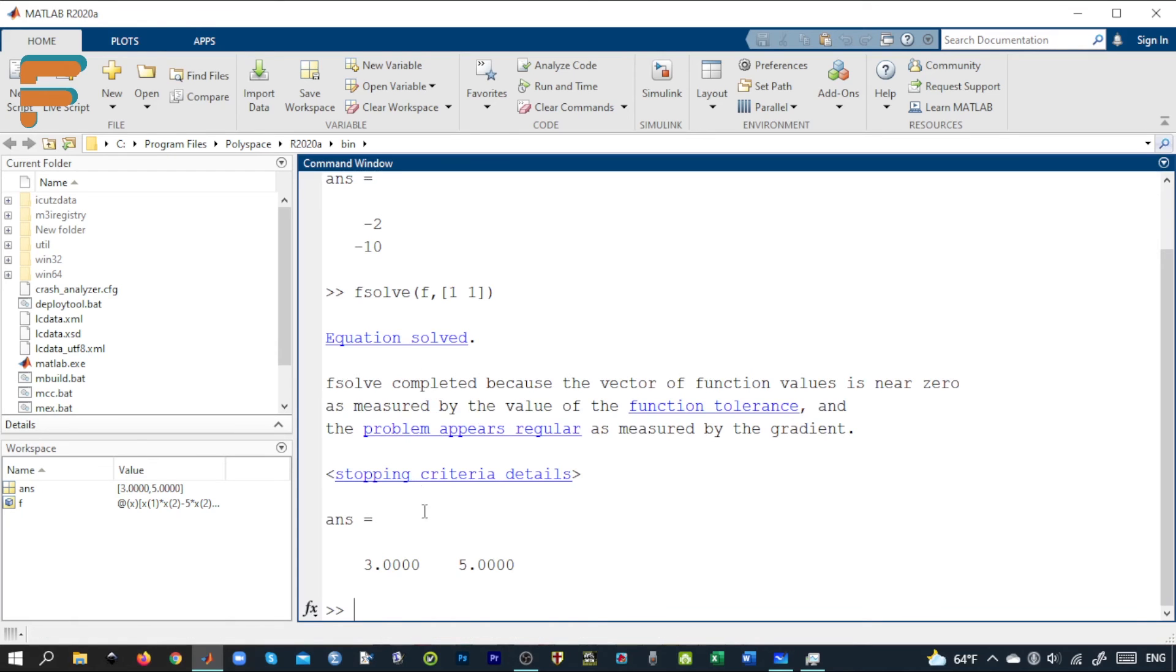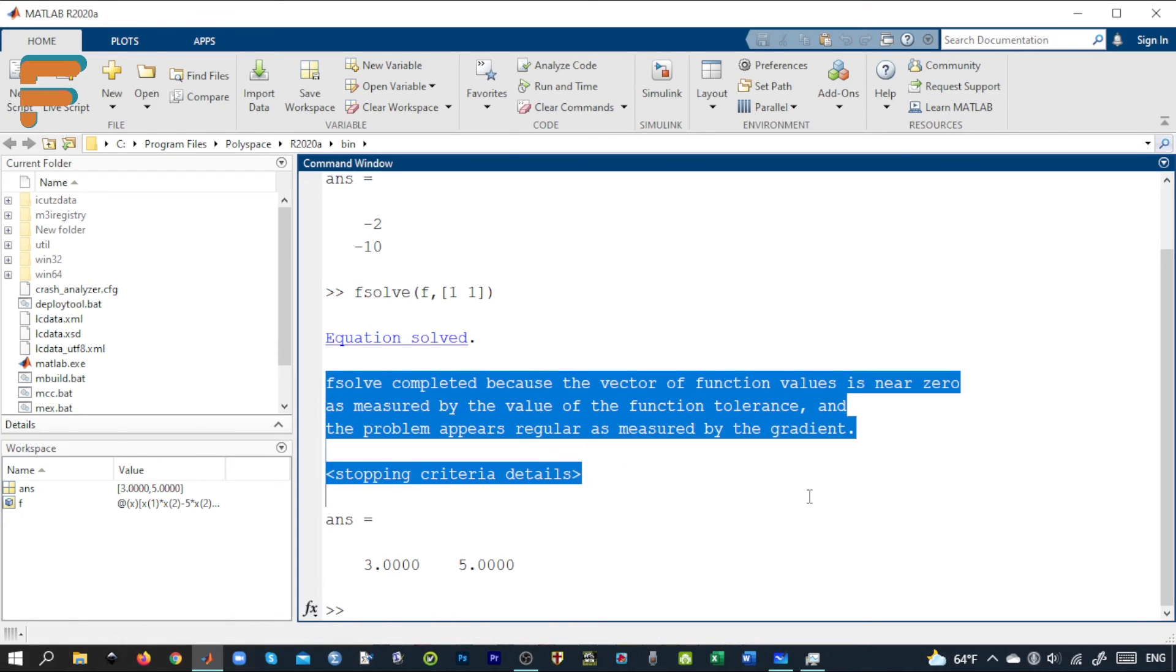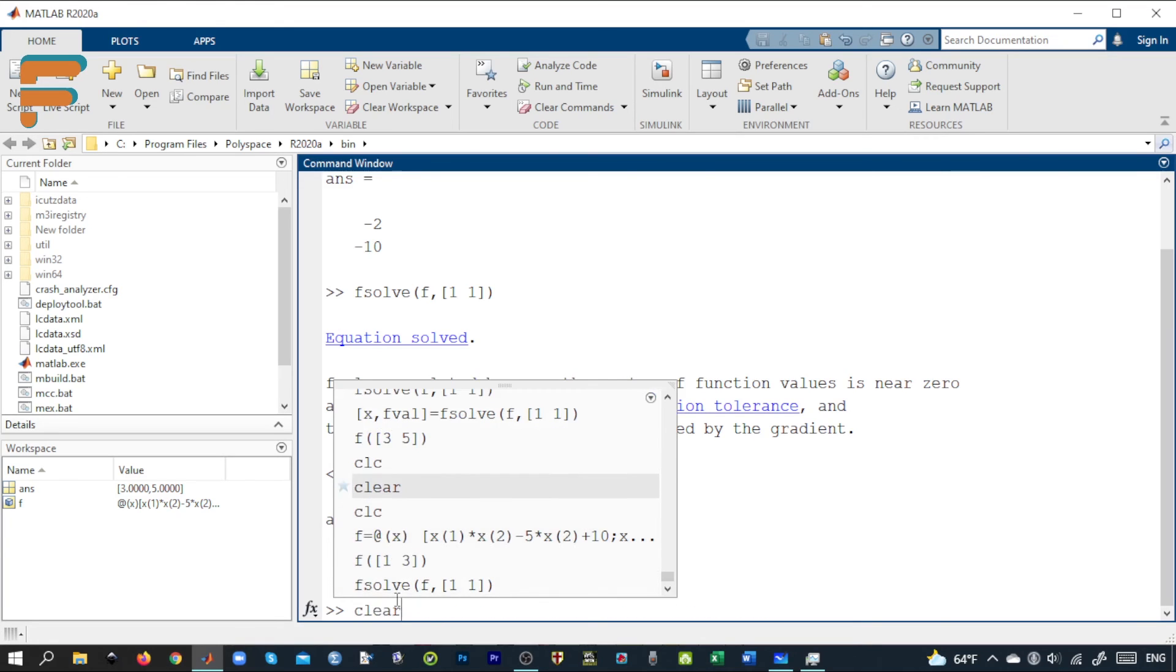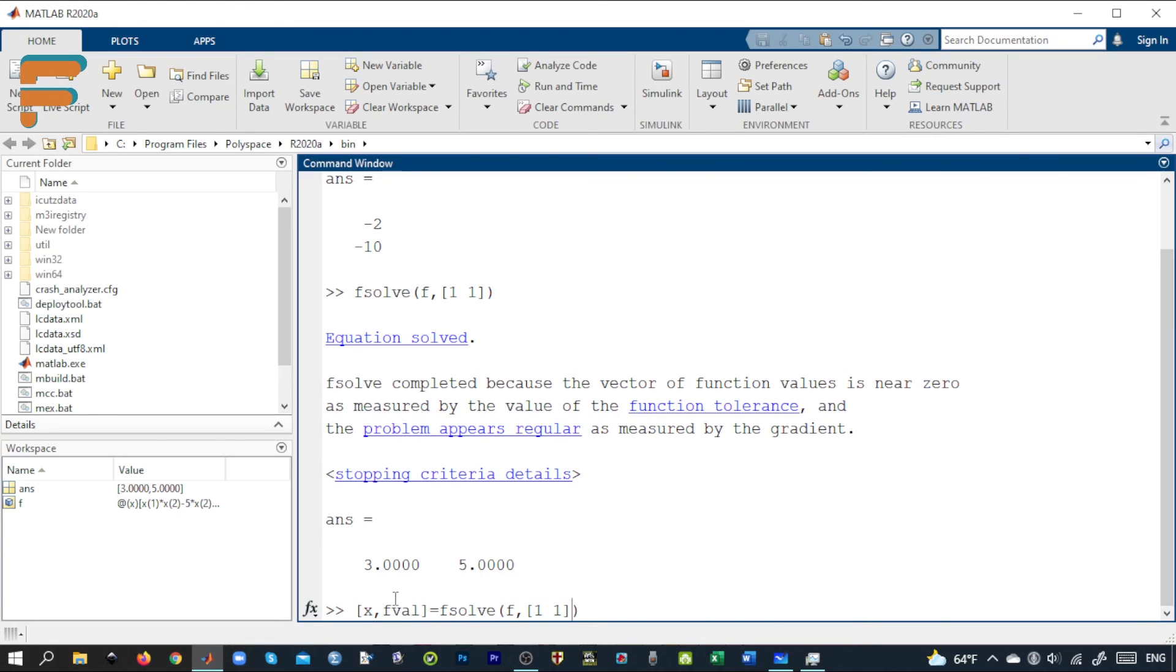As you can see here, there's some information about the algorithm and solution. Now we have the solution: 3 and 5. What is the value of f? We can get it by obtaining the second output of this function. X shows us the solutions, and the f value is the function value, which is almost zero.